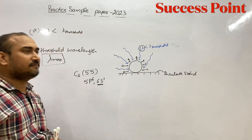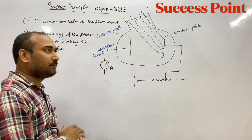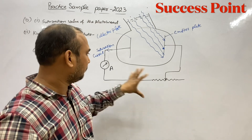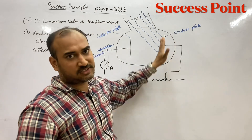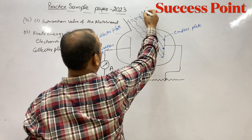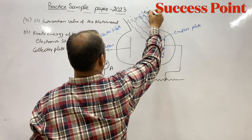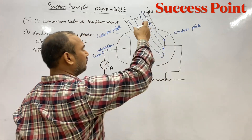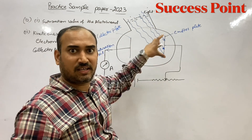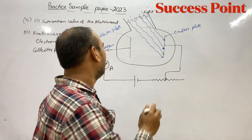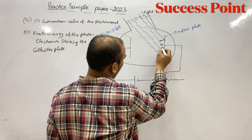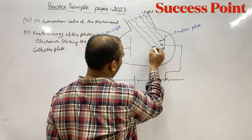अब B part में हमसे कह रहे हैं कि यहाँ पे एक experiment बना हुआ है। Photosensitive metal लगा हुआ है जिस पे light डाली जा रही है। इस light की wavelength — मतलब इसकी frequency — इतनी sufficient है कि यहाँ से photoelectrons निकल रहे हैं। और यहाँ saturation current हो रही है circuit में।